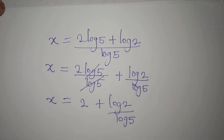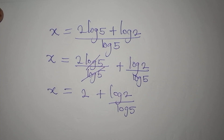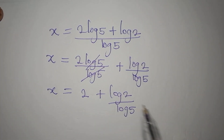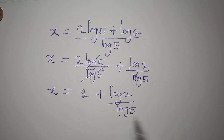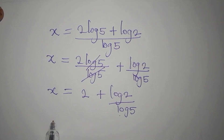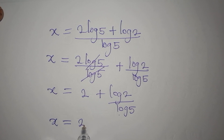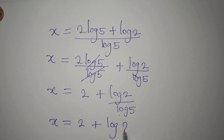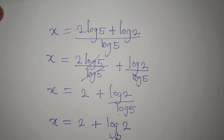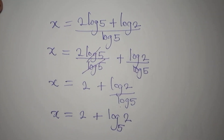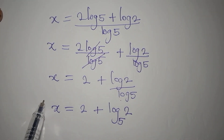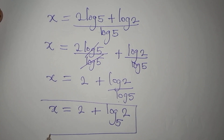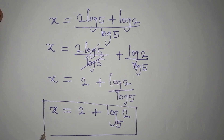At this point we apply the change of base rule. Log 2 over log 5 is log 2 to base 5. So applying the change of base, x equals 2 plus log 2 to base 5. This is now the value of x that we are going to use and verify.